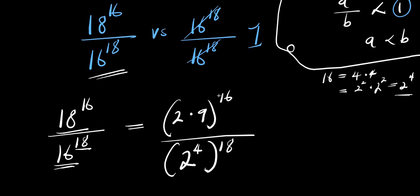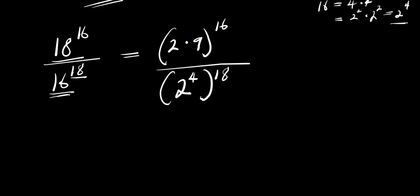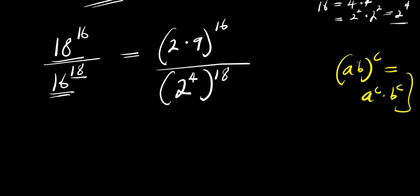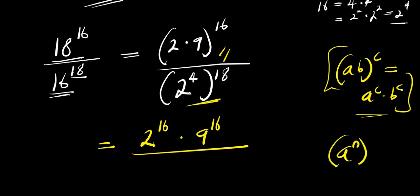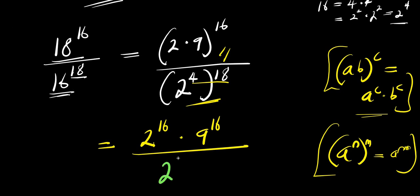We now apply the identity (A × B)^C = A^C × B^C. This gives us 2^16 × 9^16 in the numerator. For the denominator, we apply the law (A^N)^M = A^(N×M), so (2^4)^18 = 2^(4×18) = 2^72.